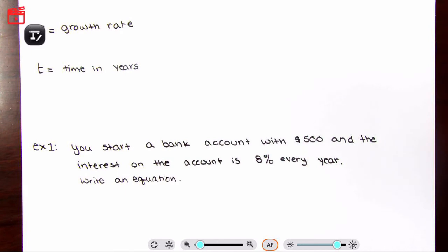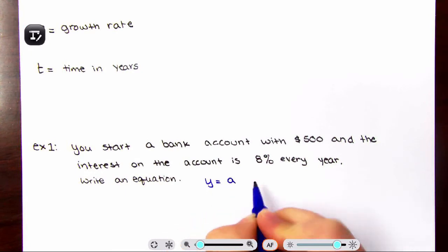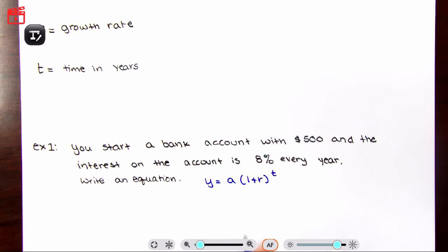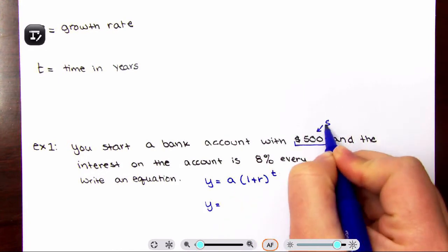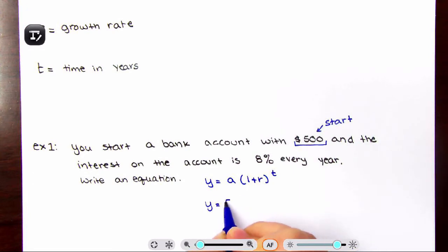Write an equation. So let's write the equation. Start out with your formula: Y equals A times one plus R to the T power. Your Y is just your equation. You can write F of X if you choose. A is your initial amount, so you start out with $500.